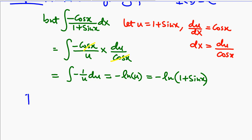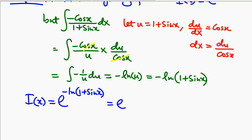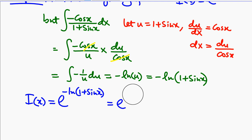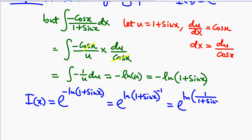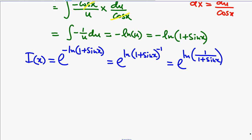So the integrating factor is equal to e to the power of negative ln of 1 plus sin x, which will be equal to e to the power of ln of 1 over 1 plus sin x — applying the laws of exponents. So this will be equal to 1 over 1 plus sin x. Our integrating factor is equal to that.